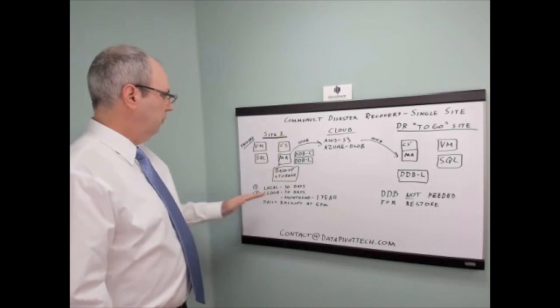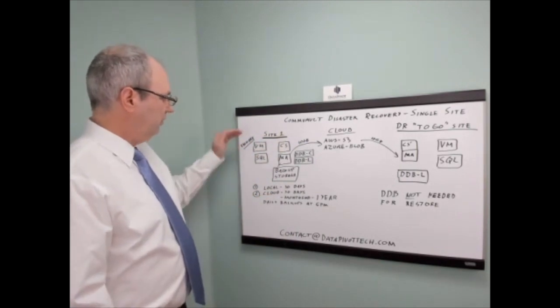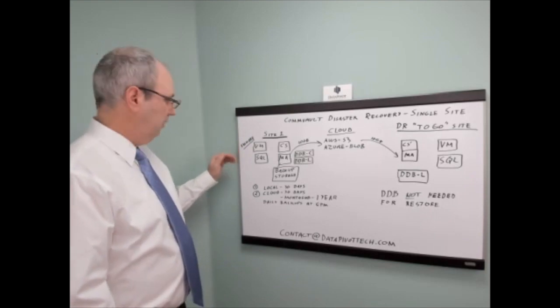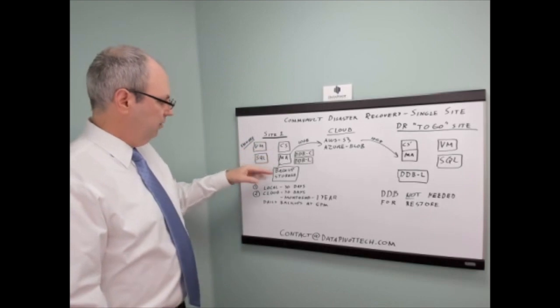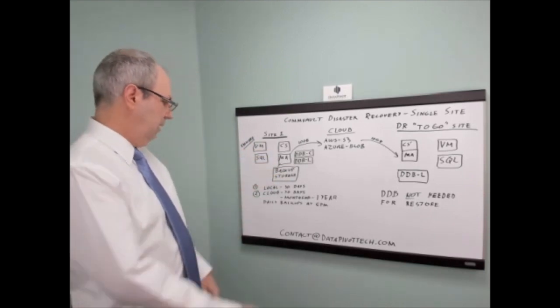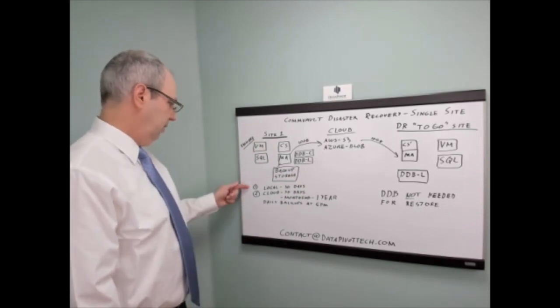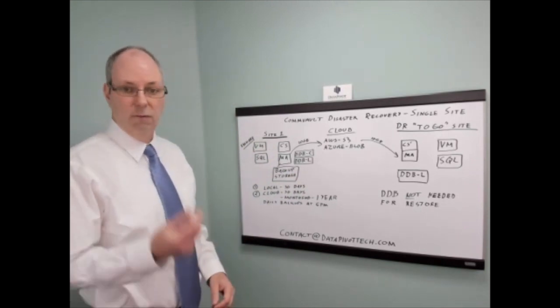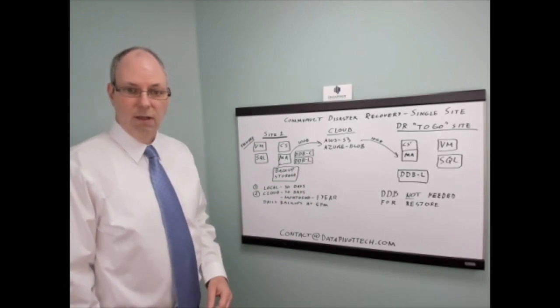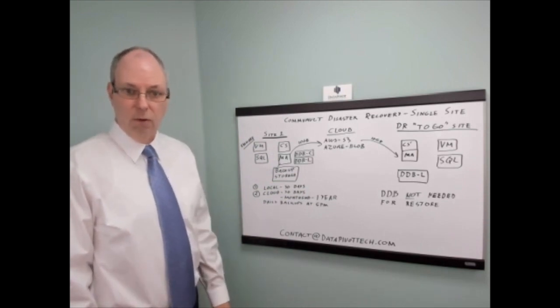Let me give you a quick overview of Site 1. Site 1 is very simple. It's basically just got VMware in it. It's not that big. It's got some VMs, some Microsoft SQL, ComServe, Media Agent. It's got some backup storage here. And our retentions are very simple. We're just going to keep 30 days on-prem. That's to recover anything right away in case somebody deletes a VM or something. You want very fast recovery. It'll be local.